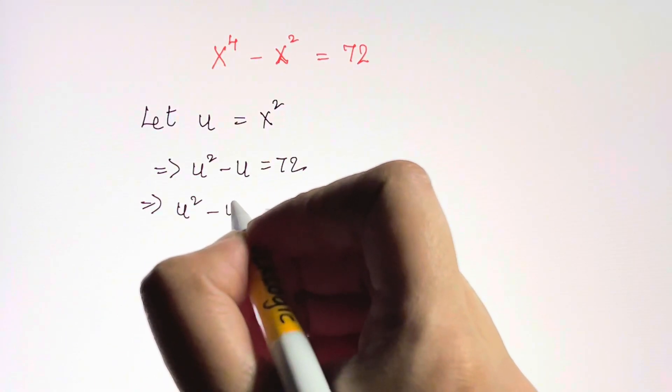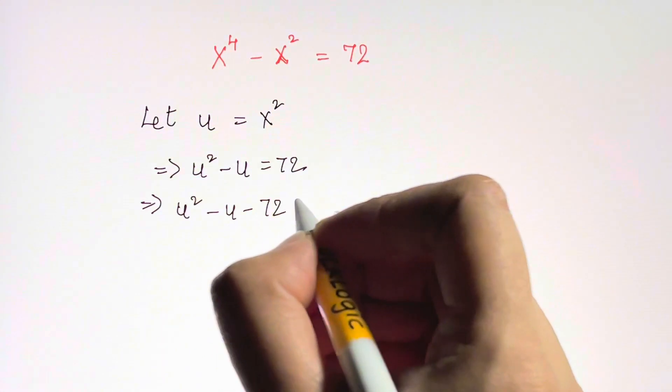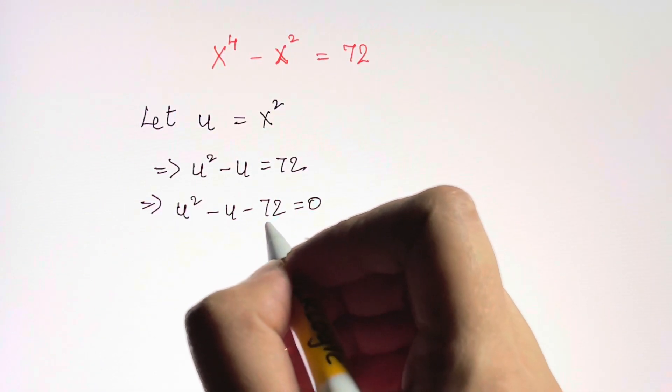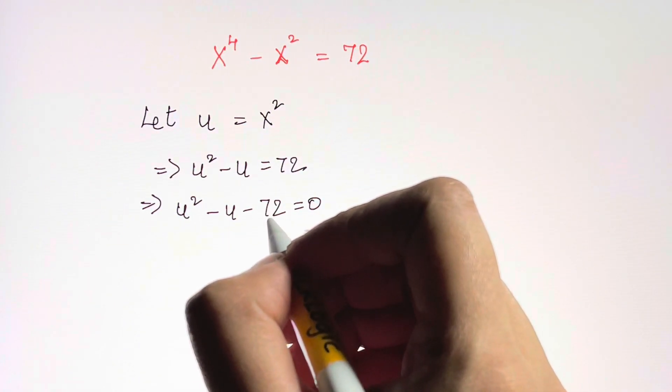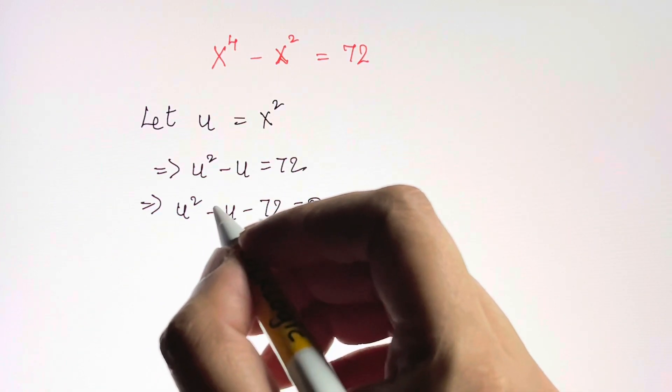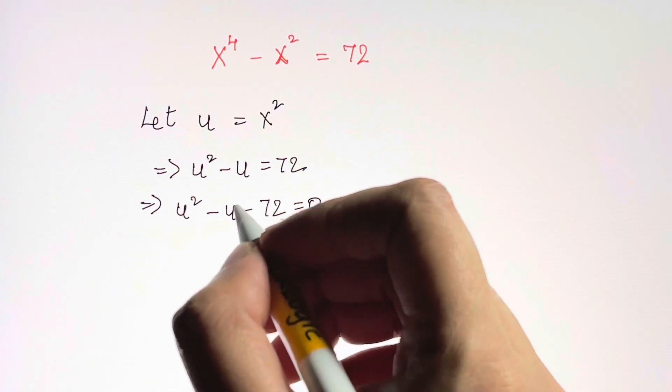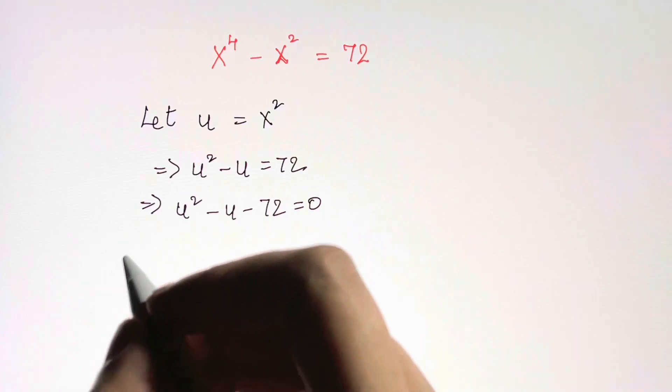Now we're going to factorize. Factors of 72, we can take 9 and 8 because we need the sum of negative 1 and the product of negative 72.